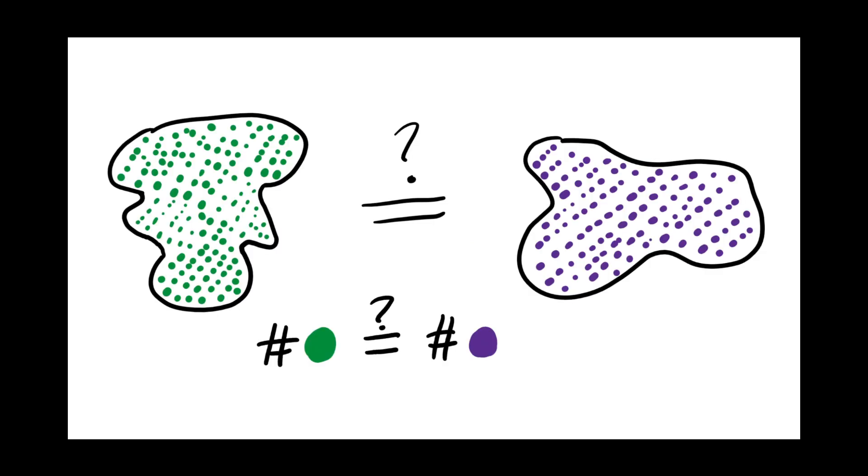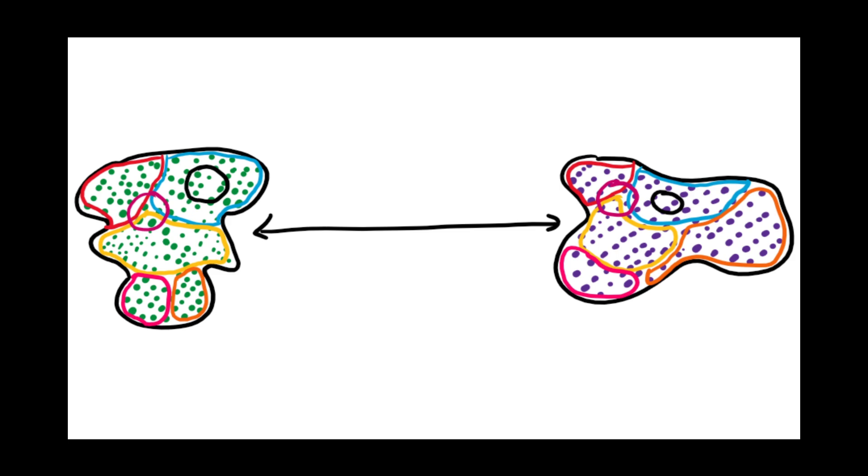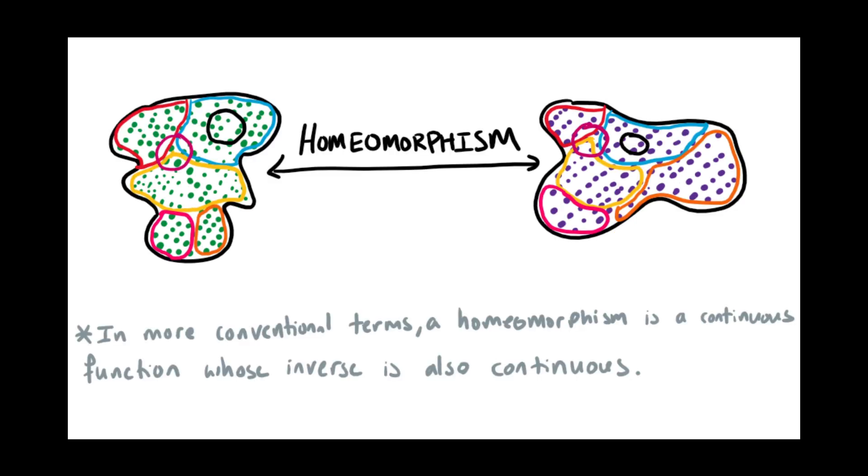So, to check that two topological spaces are the same, we first make sure we can pair up all of their points, and then all we have to do is see if we can pair up all the open sets in one space with all the open sets in the other space. This pairing is what topologists call a homeomorphism.